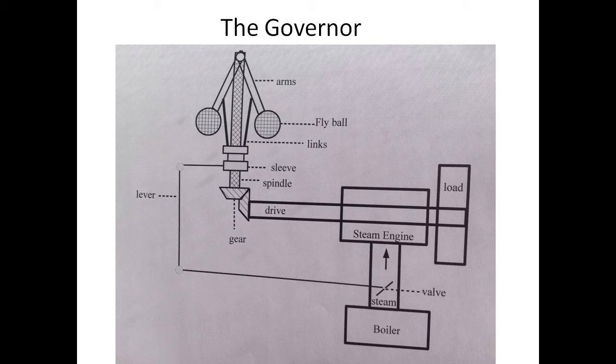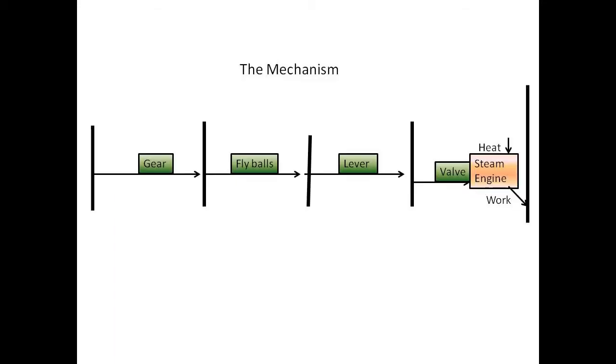The gear connects the governor to the drive shaft. The spindle causes the fly balls to move up and down, which causes the sleeve to move up and down, which causes the lever to adjust the valve to be more open or more closed. Thus we can diagram the process in terms of the four mechanisms: the gear, the fly balls, the sleeve, and the valve.